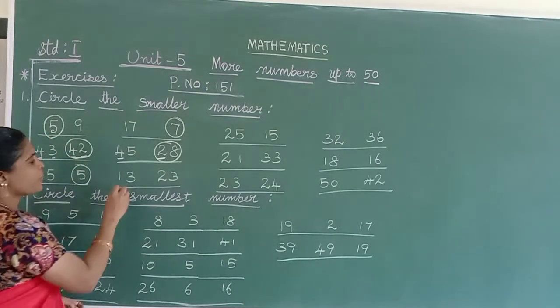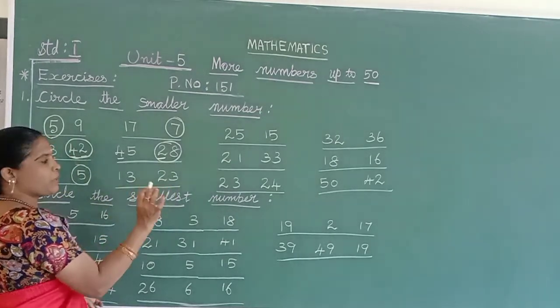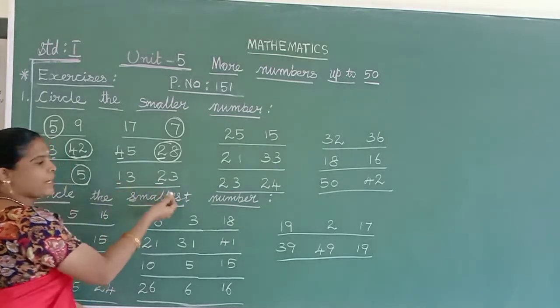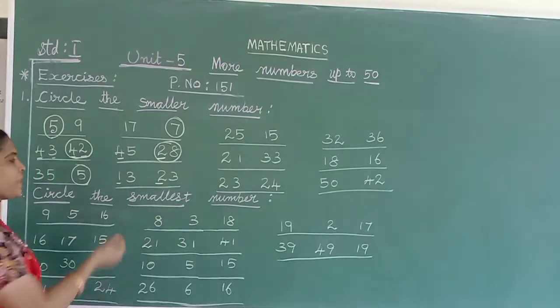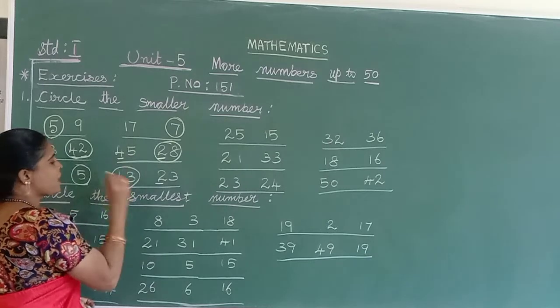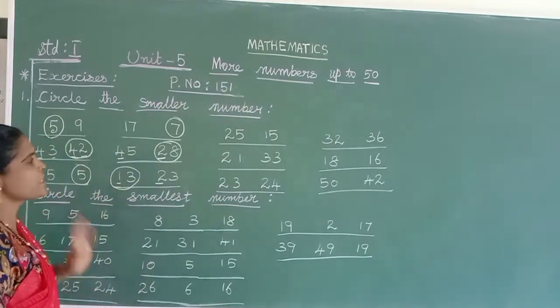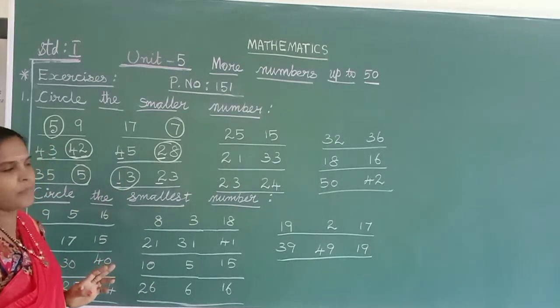Come to the next one. Both are 2-digit numbers, so come to the tens column: 1 and 2. Which is small? 1 is smaller than 2. So 13 is the smaller number. Understood?